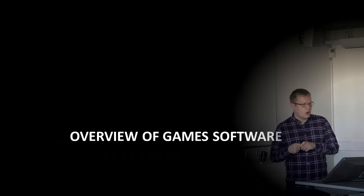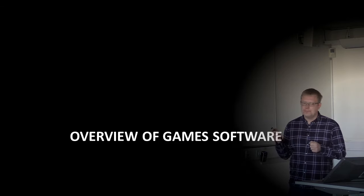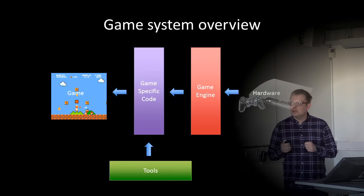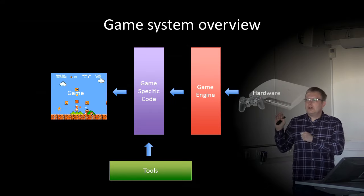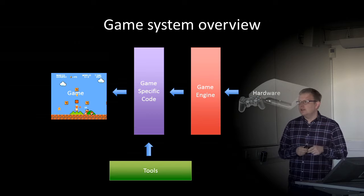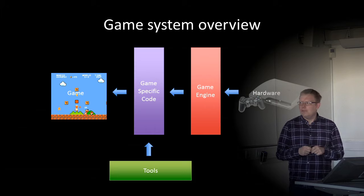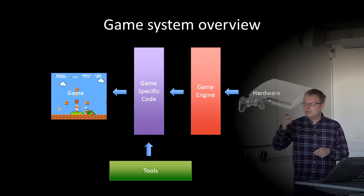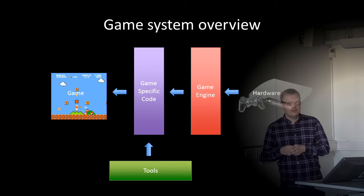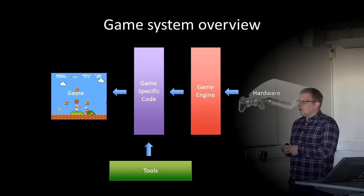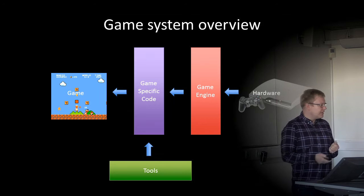Now we're going to look at some basics of game software. A game system looks like this: we have hardware, on top of that some game engine runs, and the game engine uses some game-specific code. Those two together make up the actual game — Super Mario in this case. You can also use some tools to aid development, for example to create graphical assets or make sound.